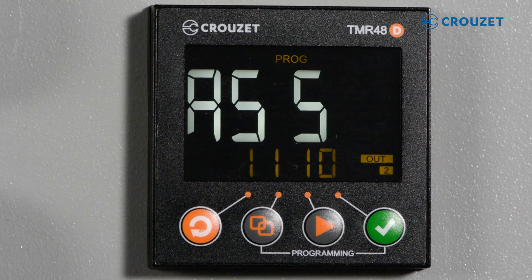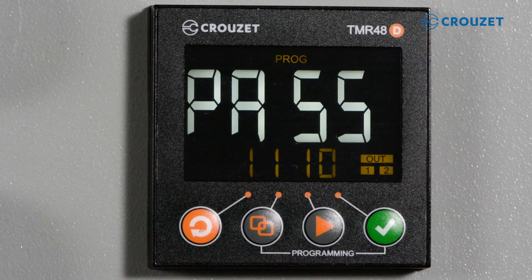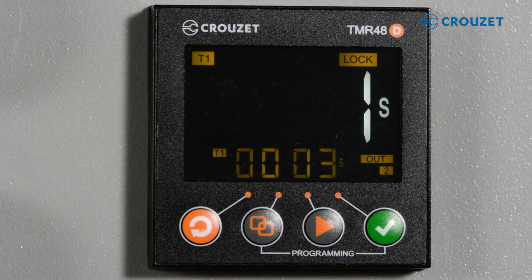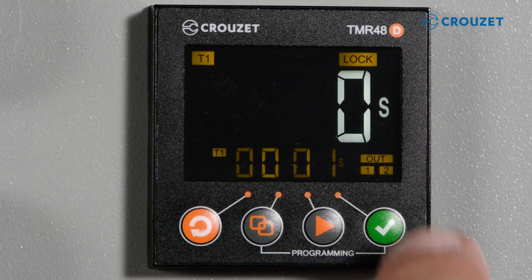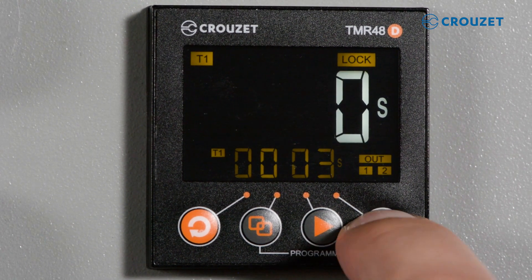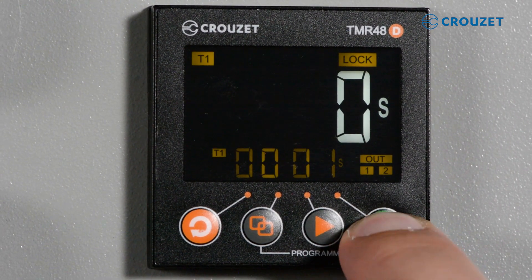You don't have to worry about somebody accidentally or intentionally changing the program because there's a lock feature that comes with the timer. The lock function completely blocks access or allows you to have preset time limits, so users will be restricted within a time limit that you specify.